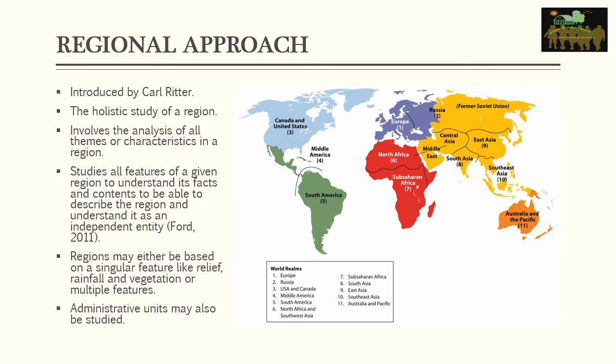Regions may be based on a singular feature like relief, rainfall, or vegetation, or on multiple features. This explains how we arrive at regions — we can have relief regions, climatic regions, and vegetation regions. We can also have a region determined by administration or function, called a functional region. For instance, Accra can be described as an administrative region because it contains the capital city of Ghana.